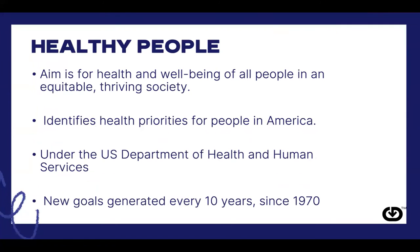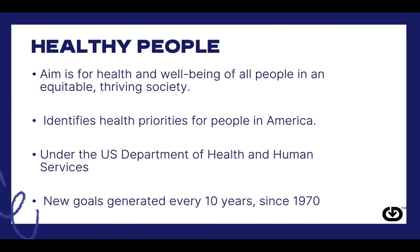Healthy People is an initiative from the government under the U.S. Department of Health and Human Services, and their aim is for the health and well-being of all people in an equitable, thriving society. The Healthy People initiative has been around since the 1970s, and new goals are generated every 10 years. It helps identify health priorities for people in America. Health literacy is now one of the main foci of Healthy People, focusing on the use of health information — not just understanding — making well-informed decisions, the responsibility of healthcare organizations to address health literacy, and putting emphasis on health literacy both for individuals and for public health.